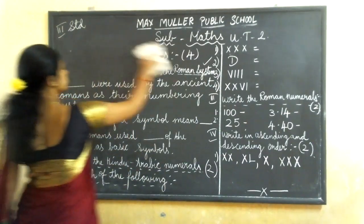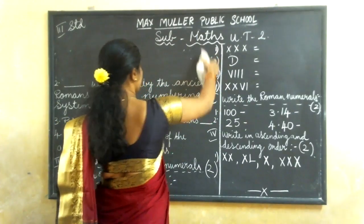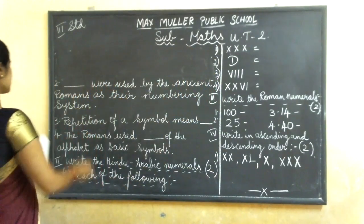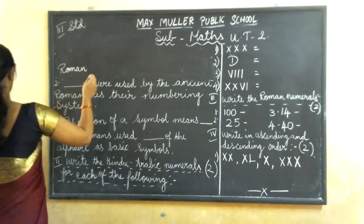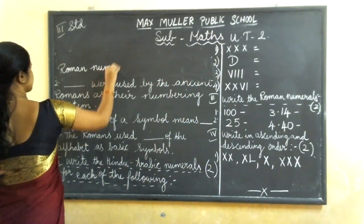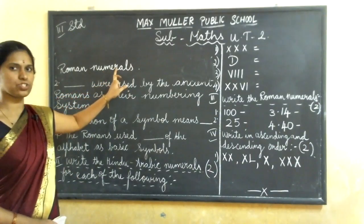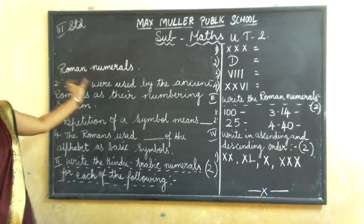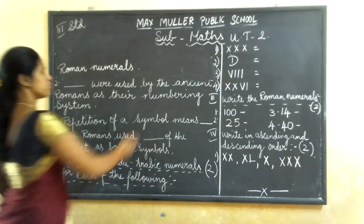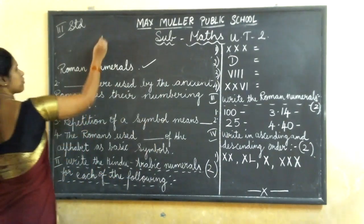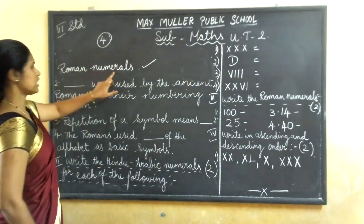Second one — if you have written correctly, you can put a tick mark. Second one's answer is Roman numerals. If you have written this one correct and this one wrong, half marks. If both answers are correct, then put a small tick. Understood? Four marks for filling the blanks. Put a tick if it is correct.